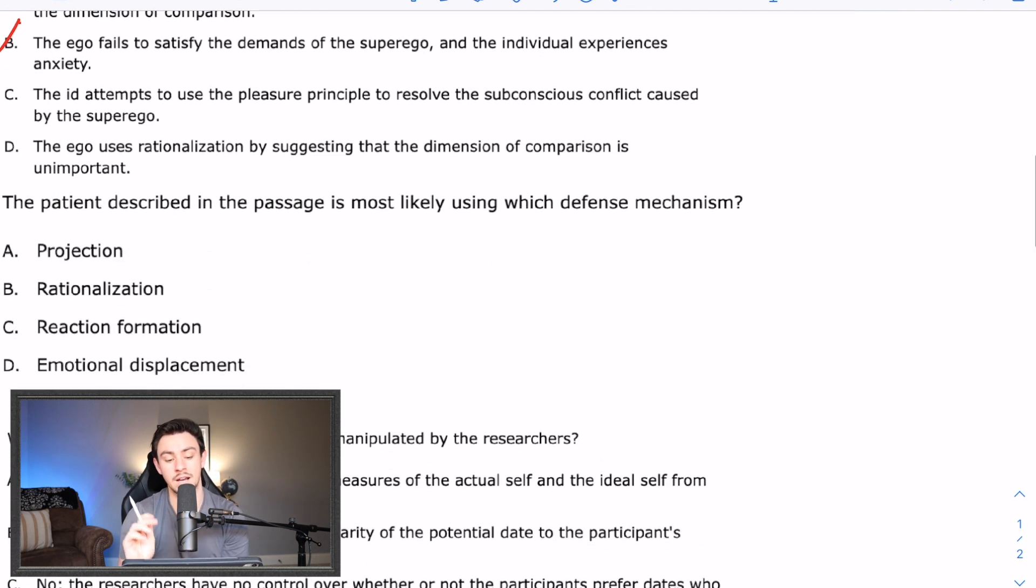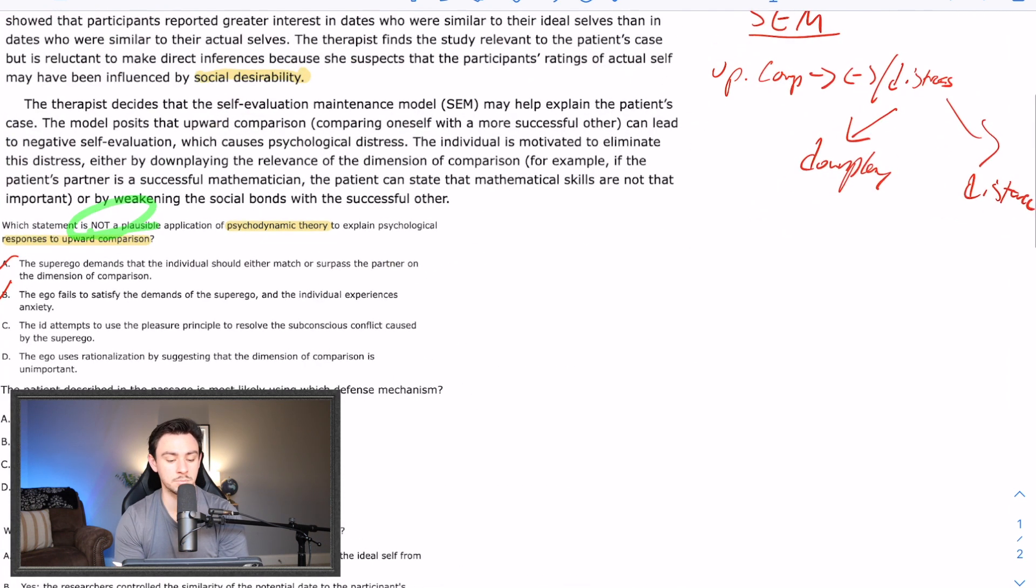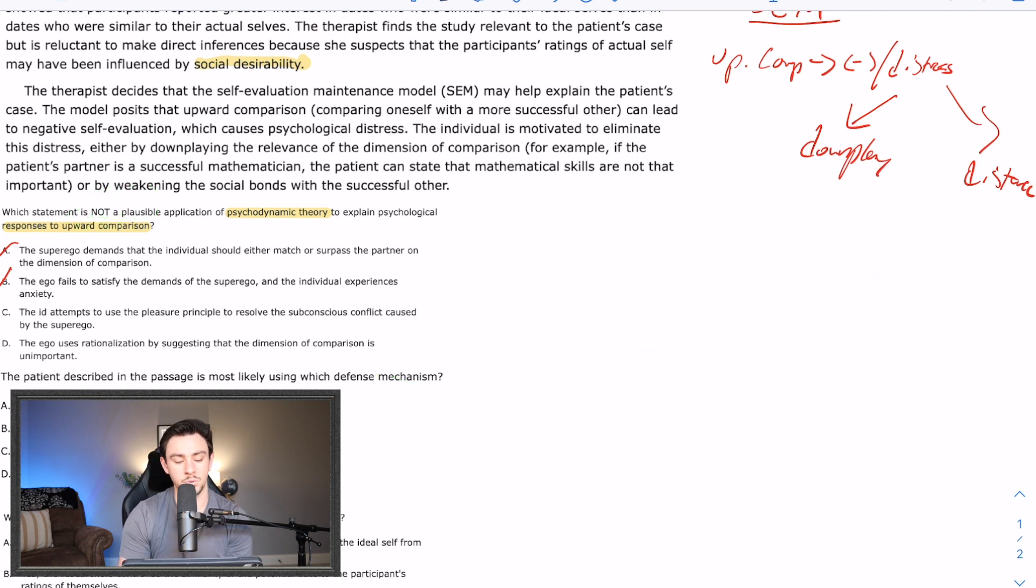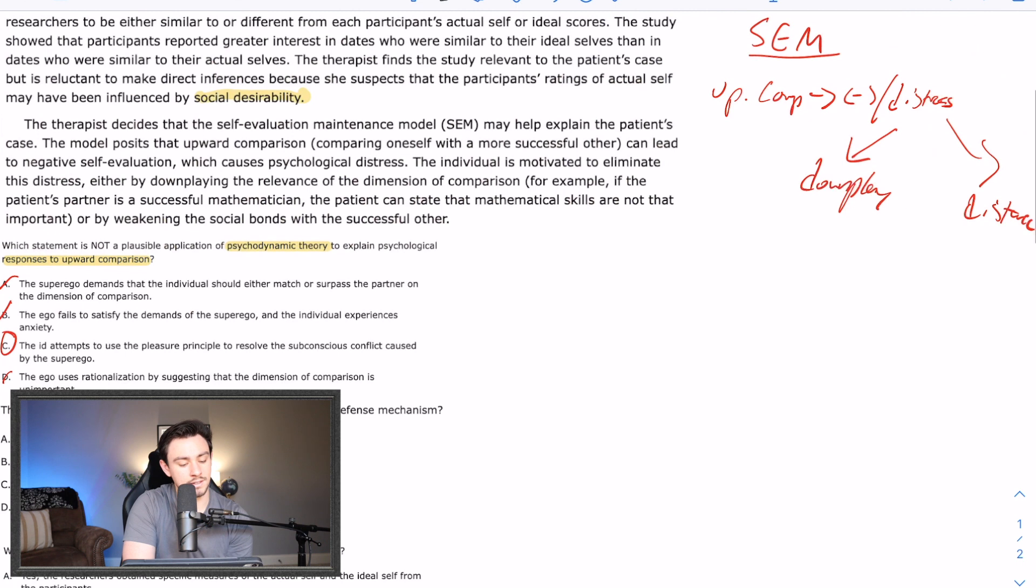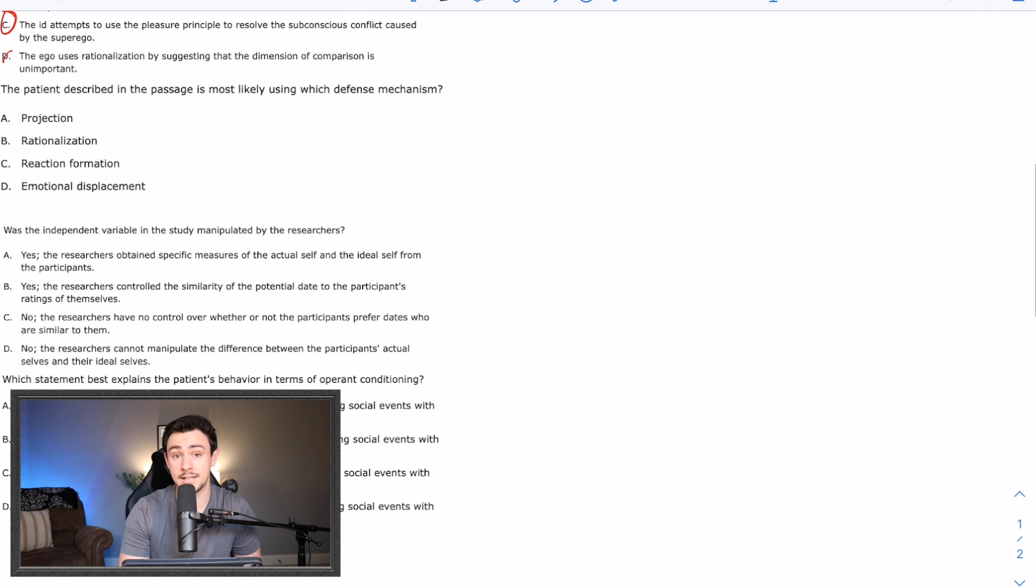And also, if you kind of remember the basics that I talked about, superego creates, ego fills. This is created by the superego and this answer choice is trying to say it's filled by the ID. So I don't really like that. So that's probably going to be our answer because we're looking for the not correct one. D says the ego uses rationalization by suggesting that the dimension of comparison is unimportant. Well, that's kind of what downplaying is, right? It's not important for your hair to look as great as Ryan Reynolds. So maybe not the correct answer here is C. And I'm going to do something that I usually don't do because I think they're really bad. That's kind of like one of the main reasons we have this channel. But for this one, since I'm not super great at the sciences, the correct, I'm going to read the AAMC's answer explanation for this one. So it says, while the ID does operate according to the pleasure principle, according to the psychodynamic theory, it is the responsibility of the ego and not the ID to resolve subconscious conflict caused by the superego. Thus, this statement is not a plausible application of psychodynamic theory to explain psychological responses to upward comparison. So that was nice and succinct and helpful like the AAMC always is. But that is their explanation of that.